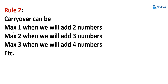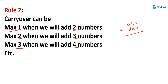Rule 2: Carry over can be maximum 1 when adding two numbers, maximum 2 when adding three numbers, maximum 3 when adding four numbers. For example, take a three-digit number ABC plus DEF. The carry from any column is either 0 or 1. If C equals 2 and F equals 4, their sum is 6 with carry 0.